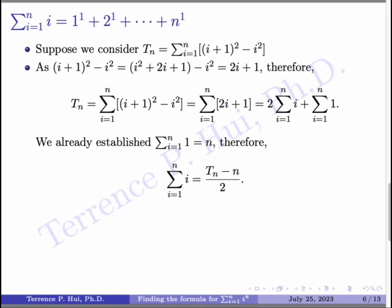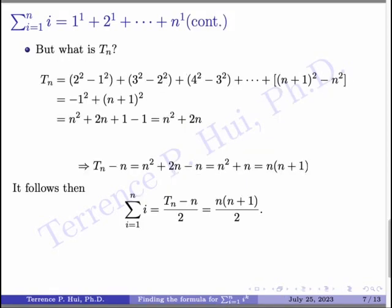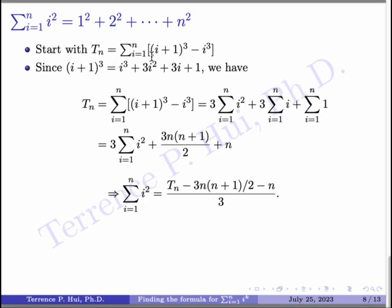Using the telescopic method, I have now confirmed the same answer as using the earlier trick. So at least I know this method worked so far. Let's try i squared. By now, you probably realize the trick: if you're trying to do i squared, always go one degree higher. Define t sub n as the sum of (i plus 1) cubed minus i cubed. Do the math: (i plus 1) cubed is i cubed plus 3i squared plus 3i plus 1, minus i cubed. You're going to get 3 times the sum of i squared plus 3 times the sum of i plus the sum of 1.